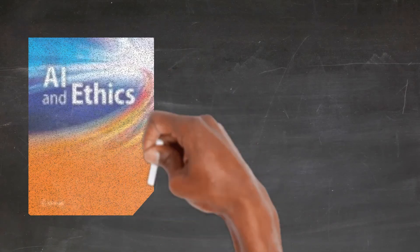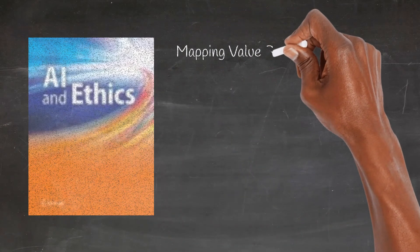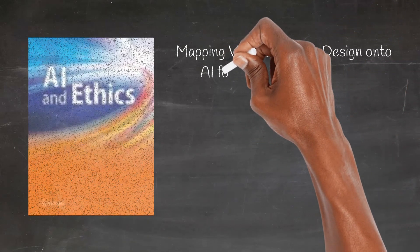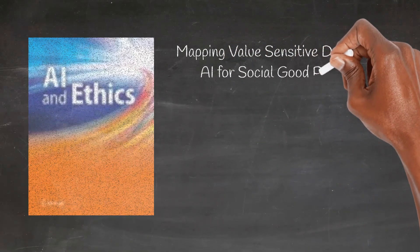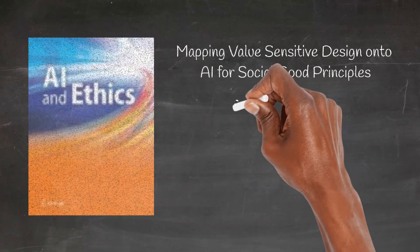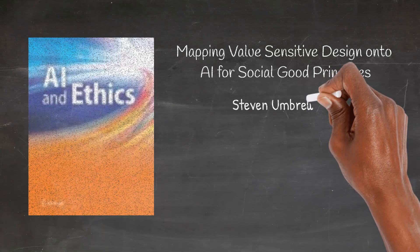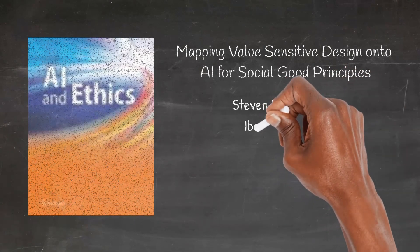Value-sensitive design provides a natural foundation in which AI for Social Good principles can be integrated and actualized. If you want to learn more about this approach and how to employ it in your design projects, you can find our full paper published in the Springer journal AI and Ethics by clicking on this link.